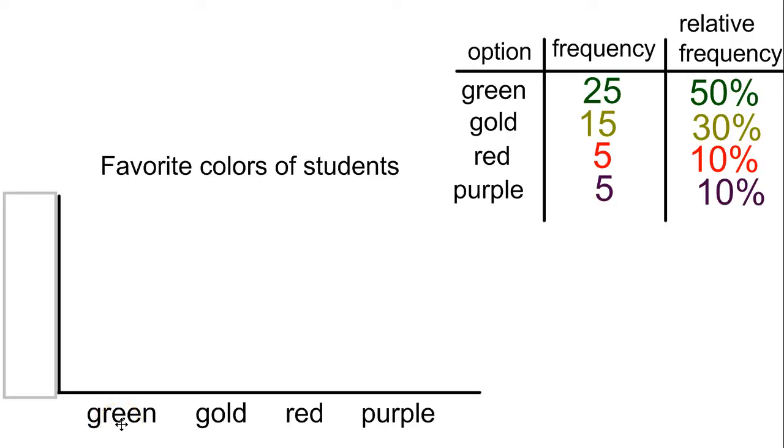Generally on a bar graph, it's nice to have your most common option come first and go down in order. It doesn't necessarily have to, but that's a common way of doing it. On the left side is your frequency, how many. So you're going to count at even intervals. You don't want to have it go up at different rates. So 0, 5, 10, 15, 20, 25. And generally you want to start at 0 because otherwise your graph can tend to be a little bit misleading.